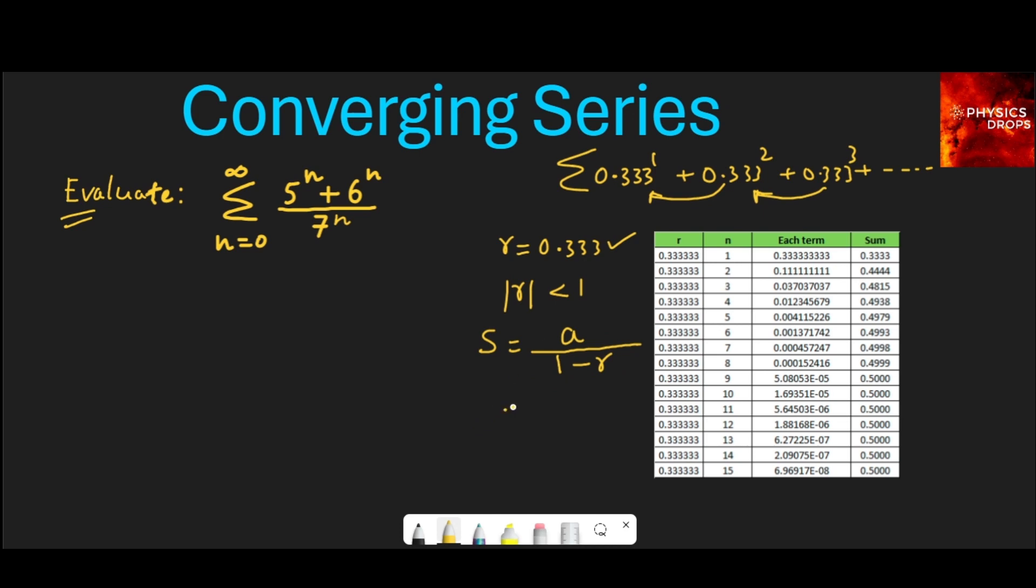In this case, the first term, if we have to evaluate this from n equals 0 to infinity, then the first term is nothing but 0.333, which is 1/3 in fractional terms. So 1/3 is the first term upon 1 minus r; the ratio is also 1/3.